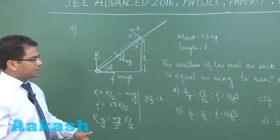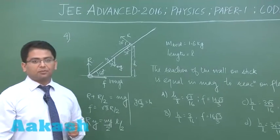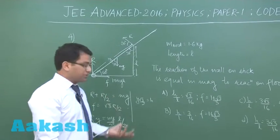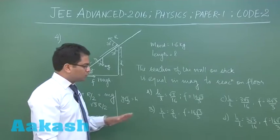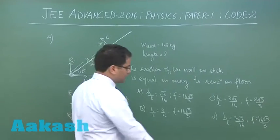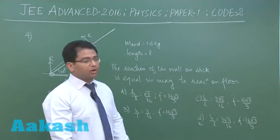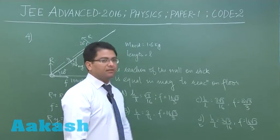So these are the three equations. When we solve these three equations and do a slight bit of calculation, the correct option is option number D. All right, now let's go to question number five.